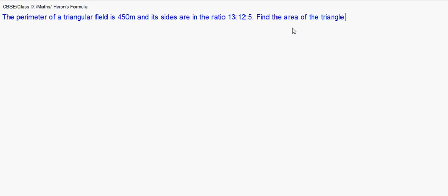I write the question first. It says the perimeter of a triangular field is 450 meters and its sides are in the ratio 13:12:5. Find the area of the triangle. That means A:B:C is in the ratio 13:12:5.